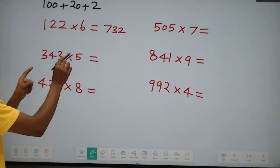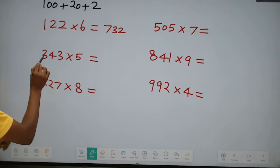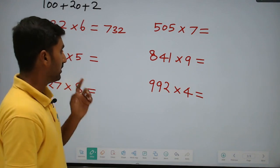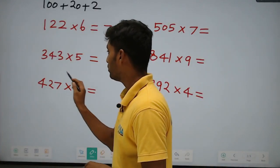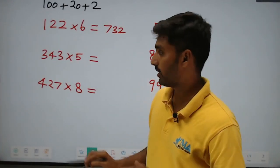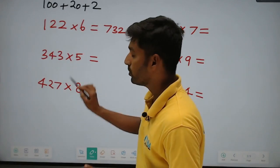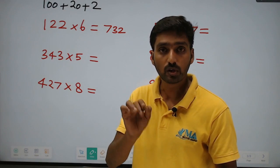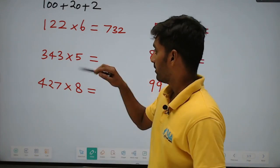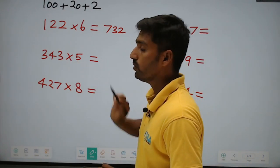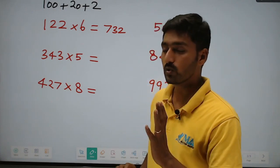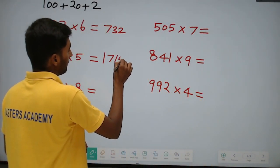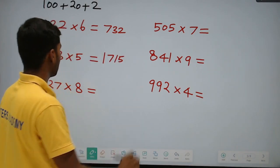Next, 343 into 5: split into 300 plus 40 plus 3. 300 into 5 is 1500. Plus 40 into 5 is 200. 1500 plus 200 is 1700. Plus 3 into 5 is 15. 1700 plus 15 is equal to 1715. It is very simple.